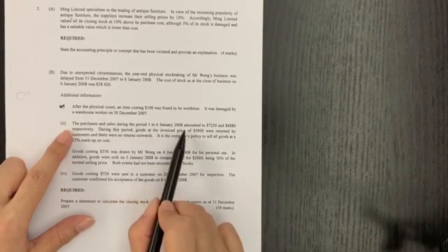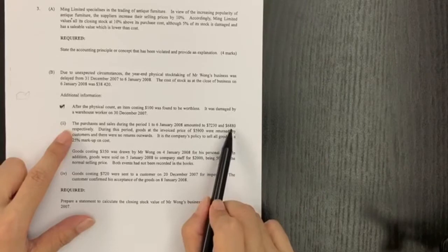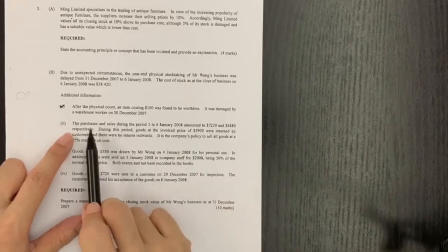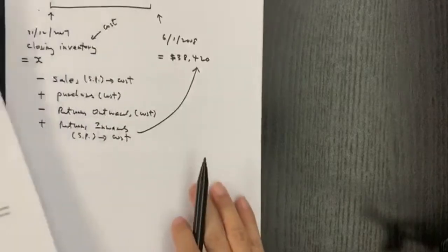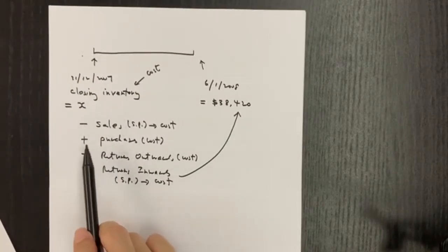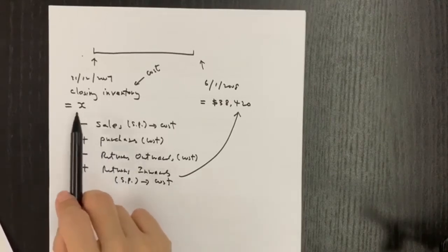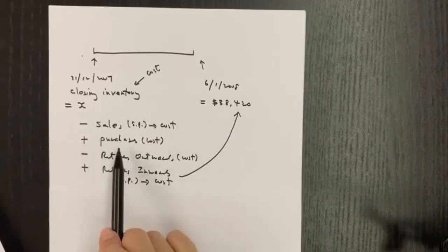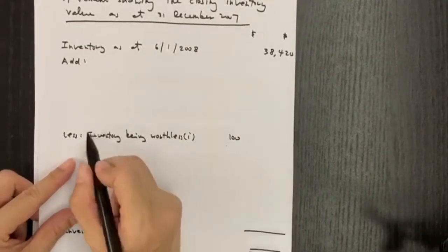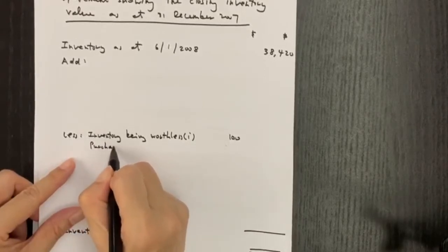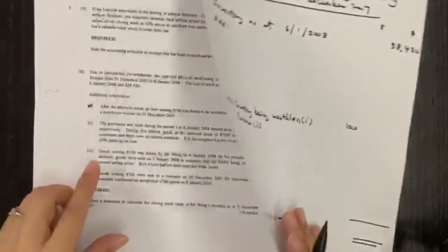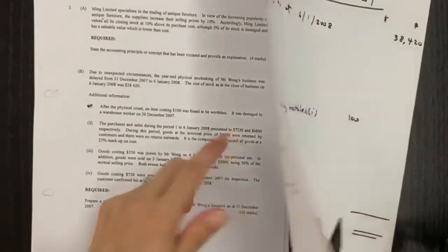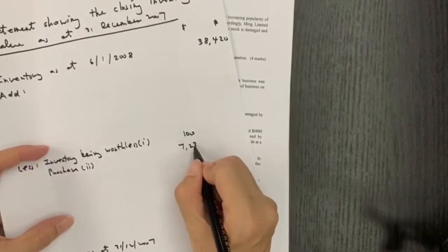Now point two: we are given purchases and sales during this period amounting to 7,230 and 6,880. After purchases in the normal situation, if we start from X, we have more inventory — plus purchases. But since we start from 38,420 and X is the subject, we change the sign to minus purchases. So in my statement, I have to minus purchases instead of plus. Purchases are already recorded at cost, so I simply minus 7,230.